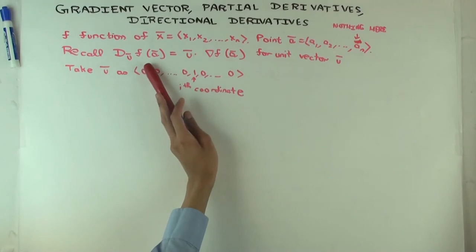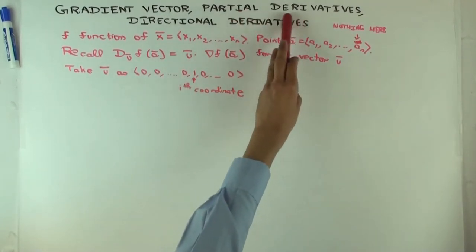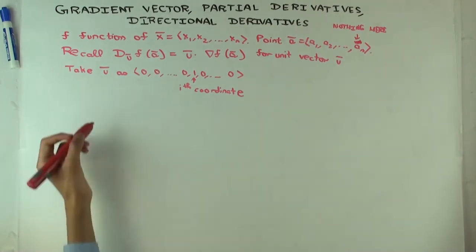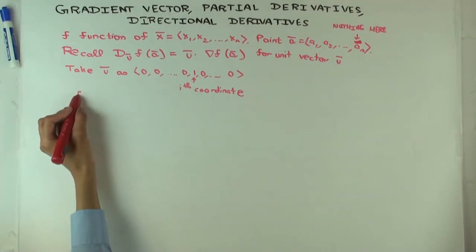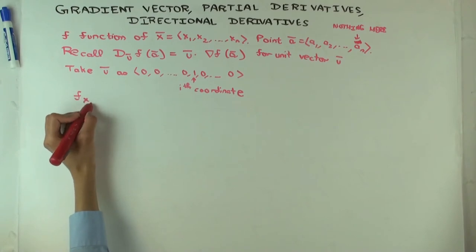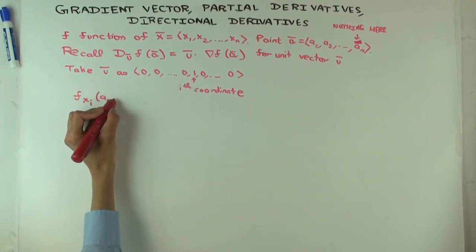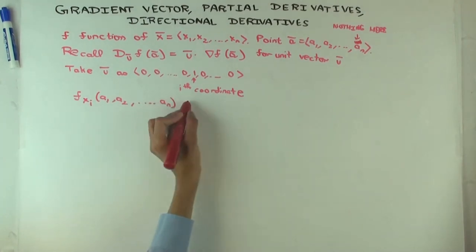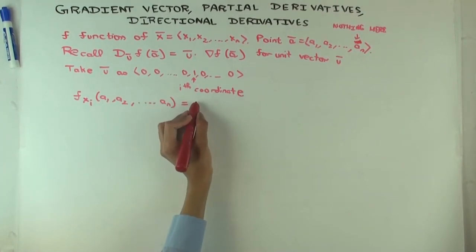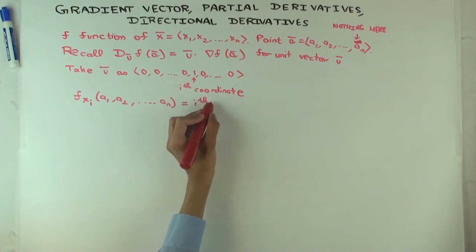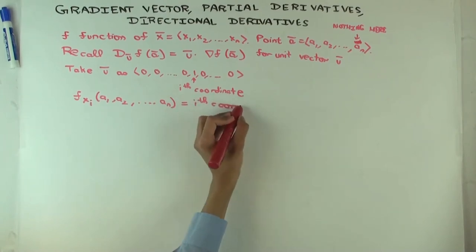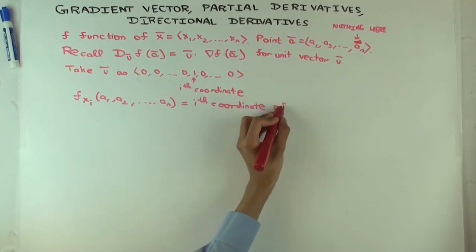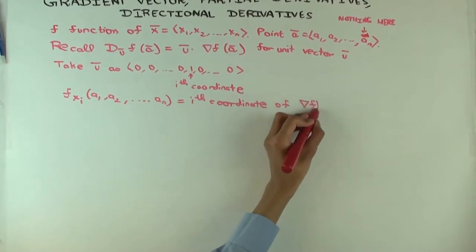But we also know from the definition of directional derivative that it's the same as the partial derivative. So what we get is: f sub x_i of (a1, a2, ...) — the partial derivative — equals the ith coordinate of the gradient vector.